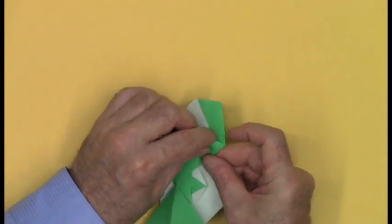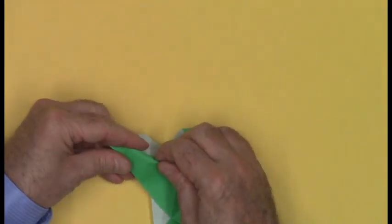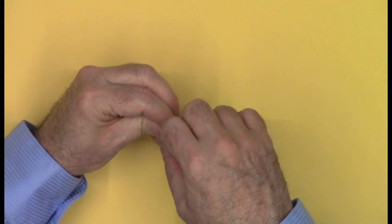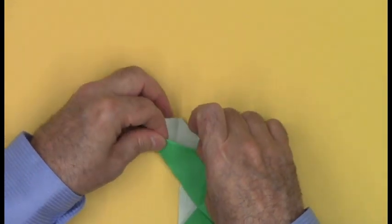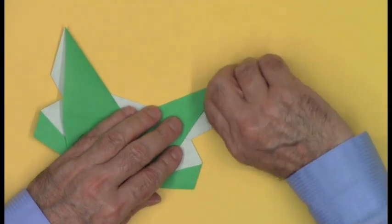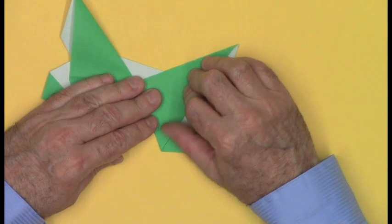You're going to mountain fold this edge under. The fold will span this corner and the wing tip. Begin by gently rolling and coaxing the paper, and when you're pretty sure it's going to run corner to corner.